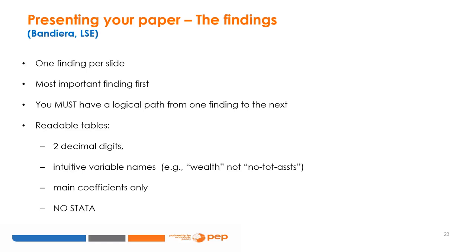Presenting your results or findings is about determining the main messages you want to communicate to your audience — in other words, what do you want them to take home from your work? In deciding which results to include and which to leave out, consider the value added by each finding. Because the slides of your results are the centerpiece of the story you are telling, having more slides with less content on each is more likely to make communicating your results manageable than cramming all of them into one slide. Here is a simple rule that Professor Bandiera of the London School of Economics recommends: one finding per slide, the most important finding first, and a logical path from one finding to the next.